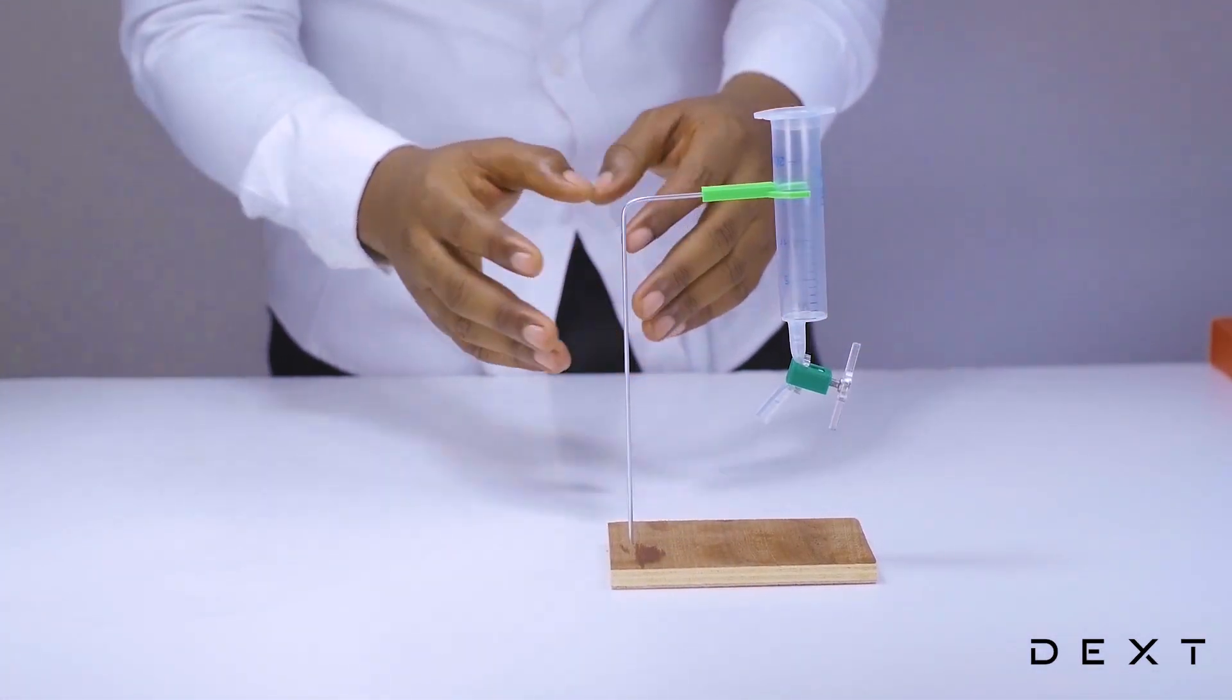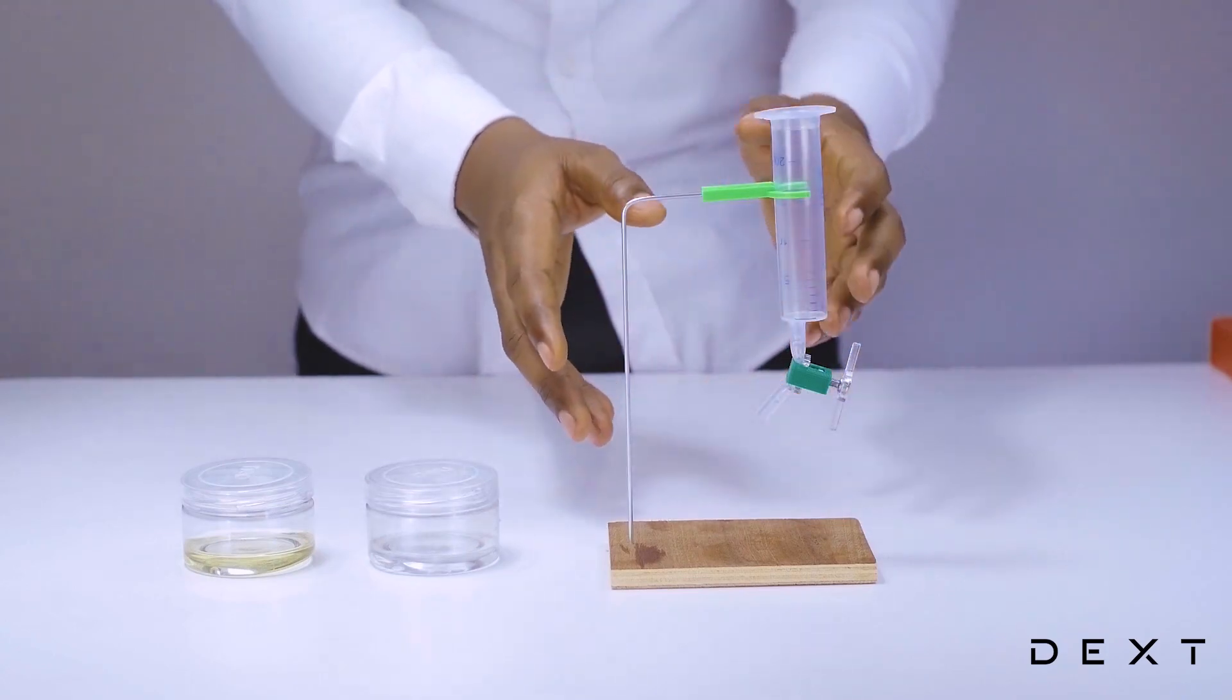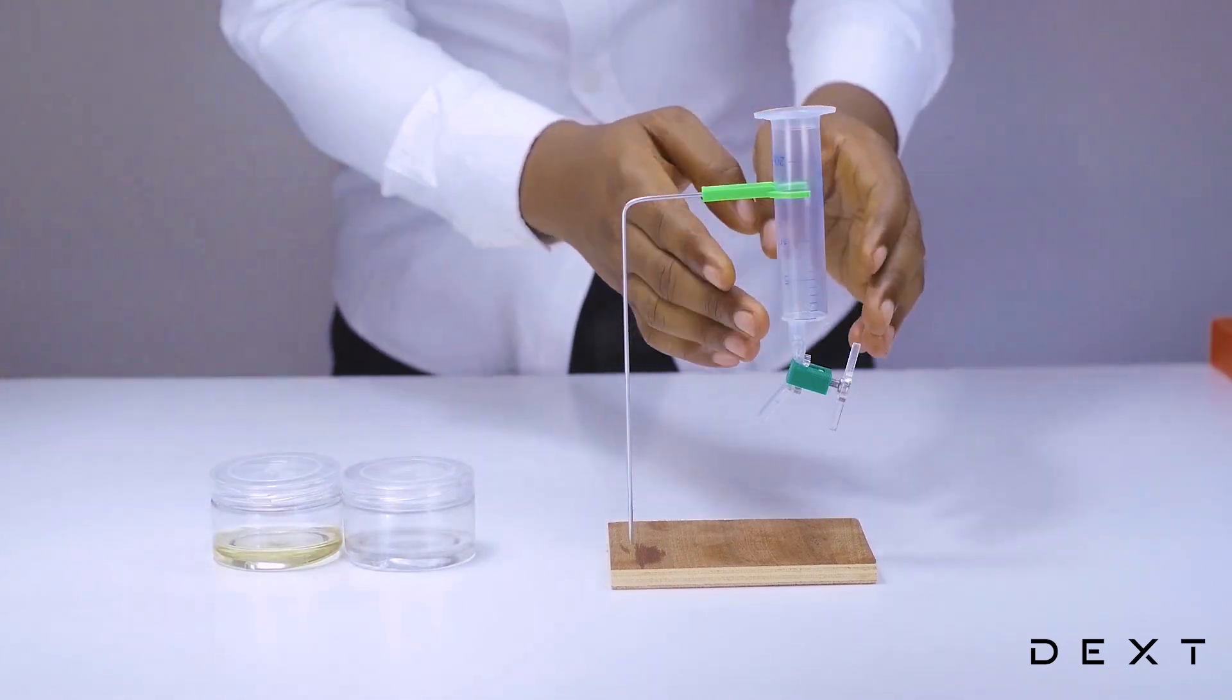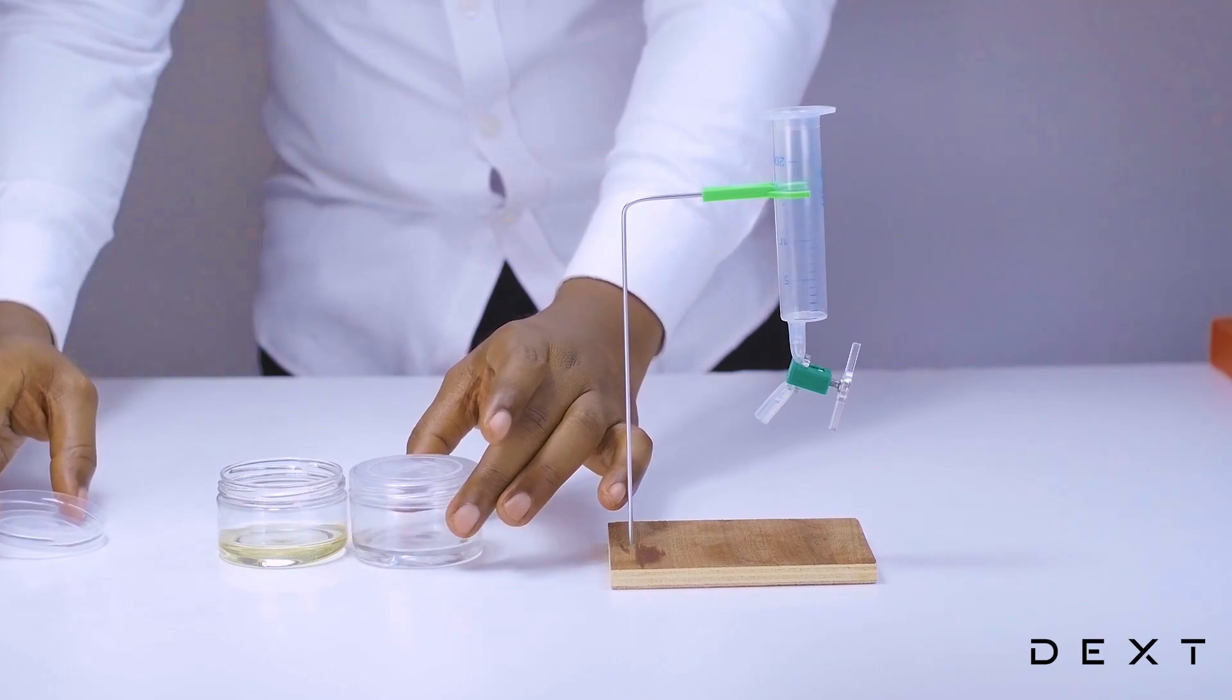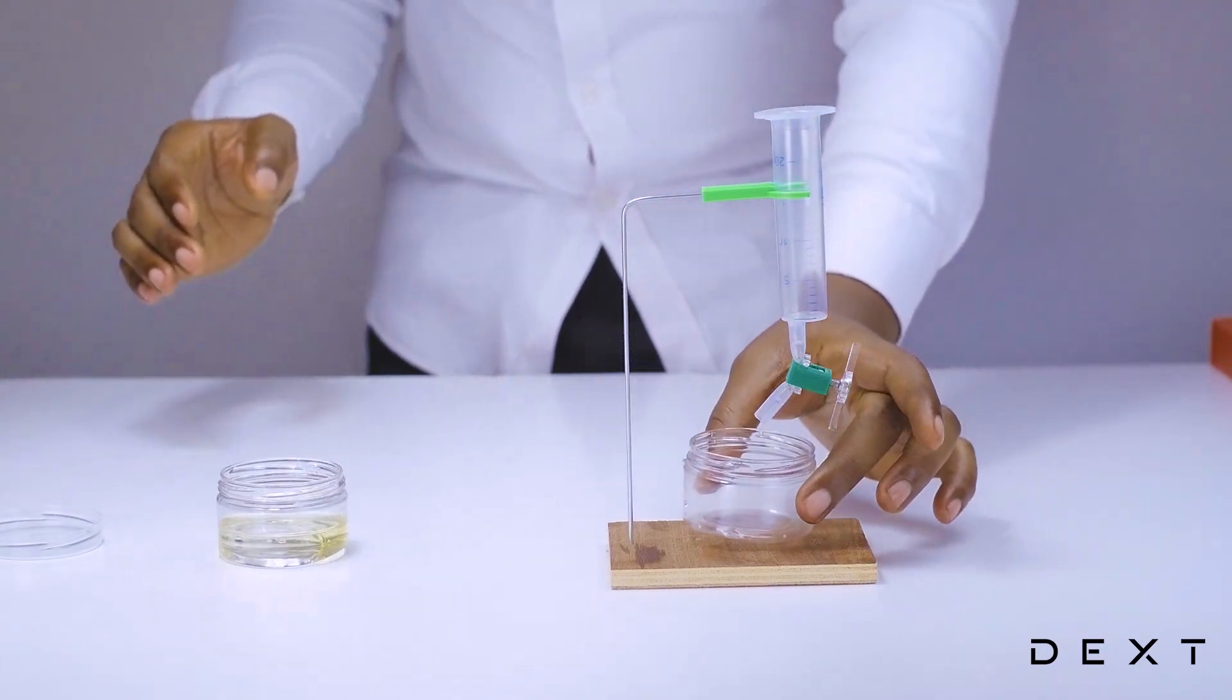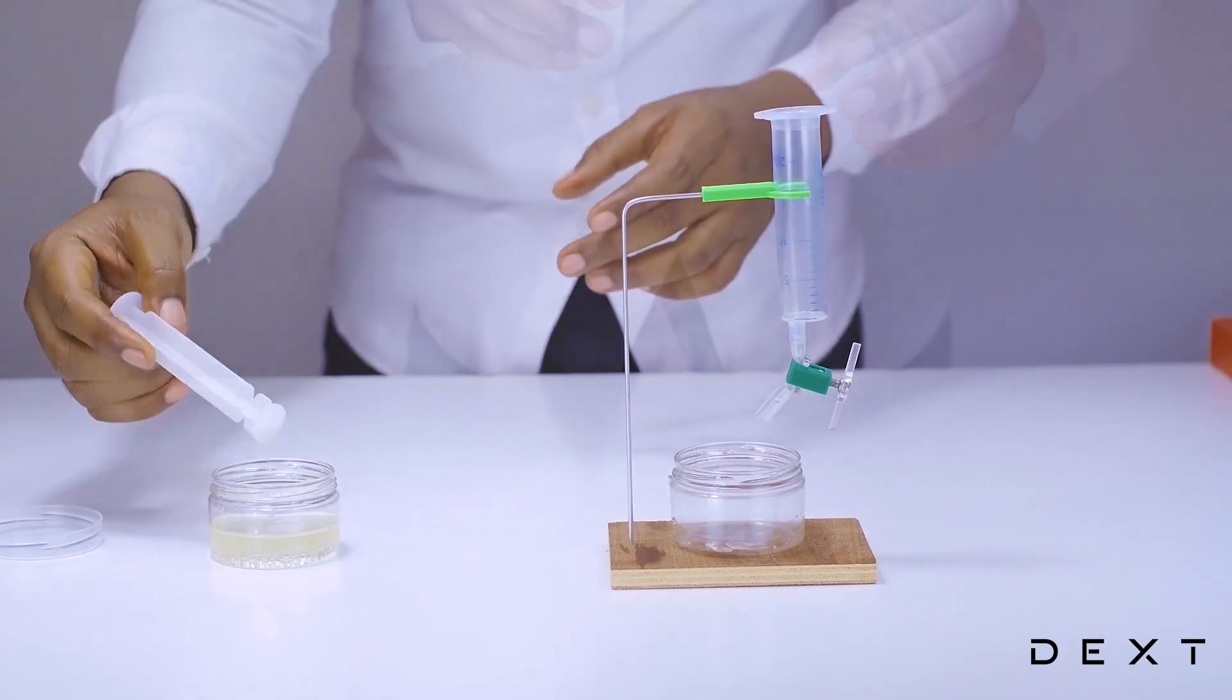Now that we have our setup done, we are going to bring in some liquids. So we have some water and some oil that we are going to use. We are going to mix these two up in the right proportions, and then try and separate them using the improvised separating funnel. So we simply pour the water into the oil, and then we are going to try and mix it with our simple plastic piece.